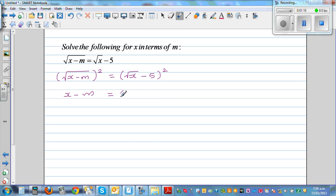This is √(x-5) times √(x-5). So this is x minus m. So now I'm expanding this out. So this is √x times √x is x.